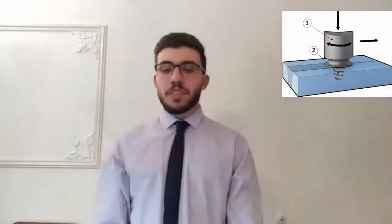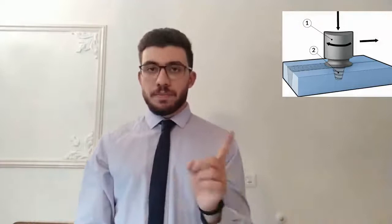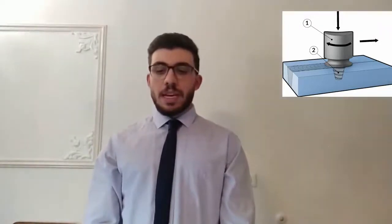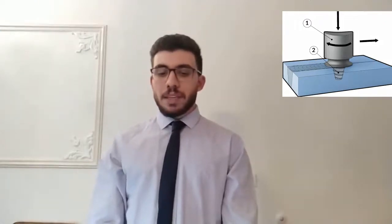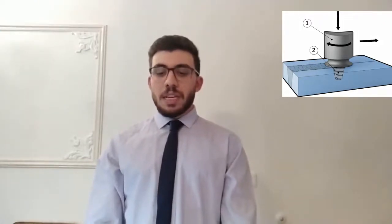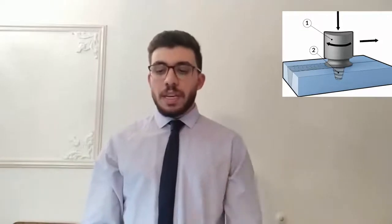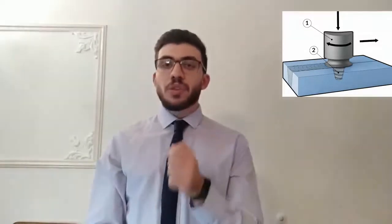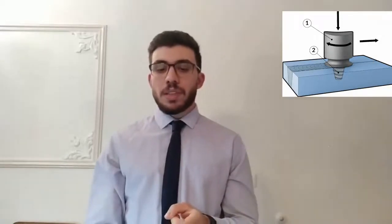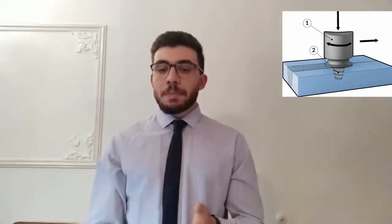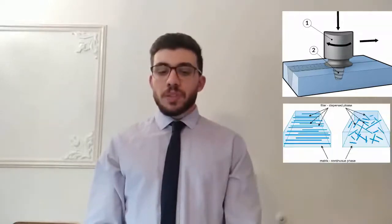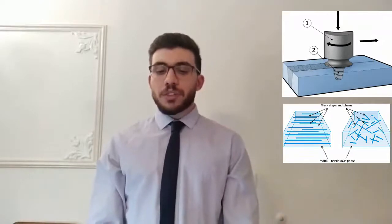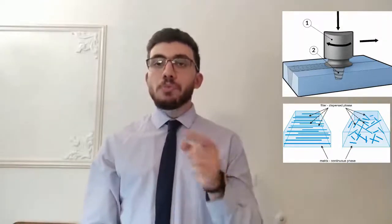You can see the schematic of this operation in the figures. FSP is a very efficient and low-cost method for making a composite surface, consisting of a pin and shoulder. A groove with a specific depth, length, and width was created. Nanoparticles with the same density were placed inside the groove, and the process was performed with a pin, dispersing the nanoparticles in the aluminum matrix by moving the pin.